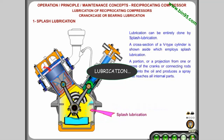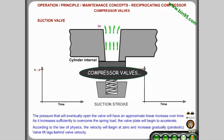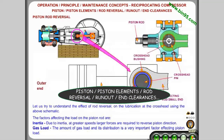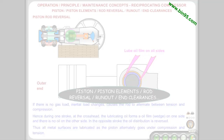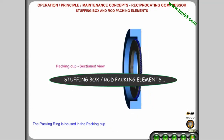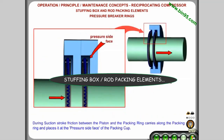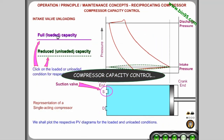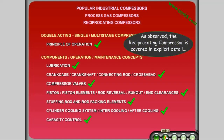Let's view some random content from the various chapters: lubrication, crankcase, crankshaft, connecting rod and crosshead, compressor valves, piston elements, rod reversal, runout, end clearances, stuffing box and rod packing elements, compressor capacity control. As observed, the reciprocating compressor is covered in explicit detail.